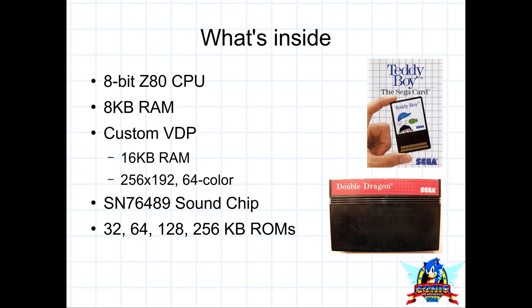Here you can see Double Dragon on the right — that is one of the ROM cartridges you would plug into the top. There was also a little port on the front where smaller ROMs could be slid in, credit card sized. That Teddy Boy Sega card image shows what one of those looks like. Those ROMs would have anywhere between 32 to 256 kilobytes of ROM.